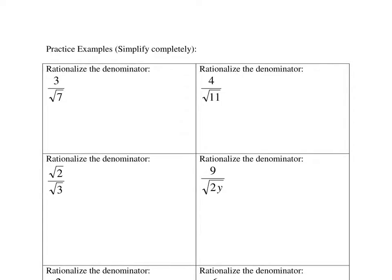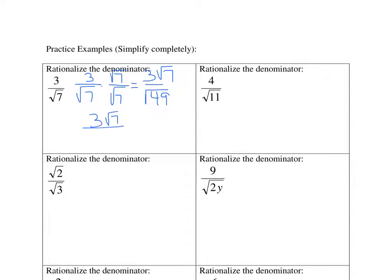Now some practice problems. We have 3 over the square root of 7. I want to get rid of the square root of 7, so I multiply it times itself — that makes the square root of 49. Whatever I do in the denominator, I also have to do in the numerator: 3 times the square root of 7 is 3 square root of 7. Now I simplify the denominator — the square root of 49 is 7 — so the answer is 3 square root of 7 over 7.